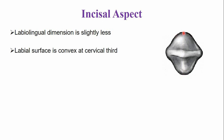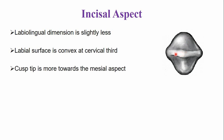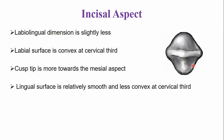The labial surface is convex, mainly at the cervical third of the crown. The cusp tip is more towards the mesial side. From the occlusal aspect, the lingual surface appears smooth and less convex at the cervical third due to the less development of the marginal ridges, lingual ridge, and cingulum, making it appear smoother compared to the maxillary canine.